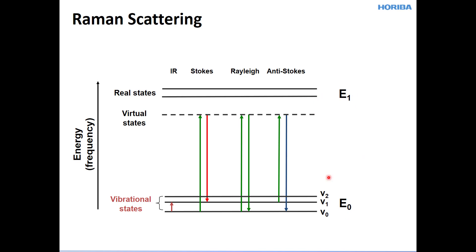Within each of these electronic states, you have a manifold of vibrational energy states: nu sub zero, nu sub one, nu sub two. Let's talk about elastic light scattering, or Rayleigh scattering, first. The molecule is originally in the ground electronic and vibrational states, and it's not a resonance condition, so the energy of the incident photon is not sufficient for an electronic transition — no absorption occurs. The molecule is essentially transparent to this radiation.